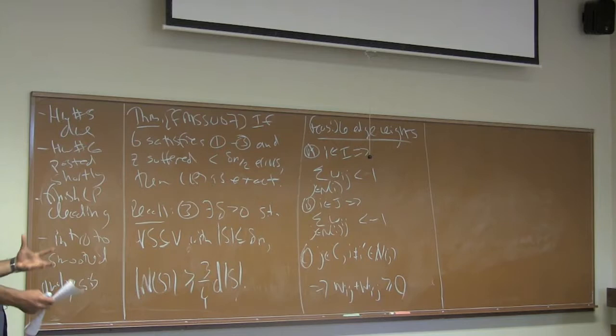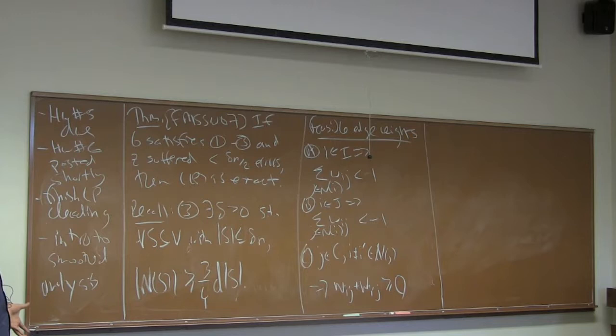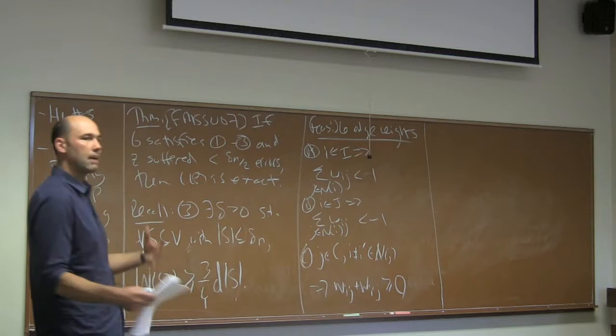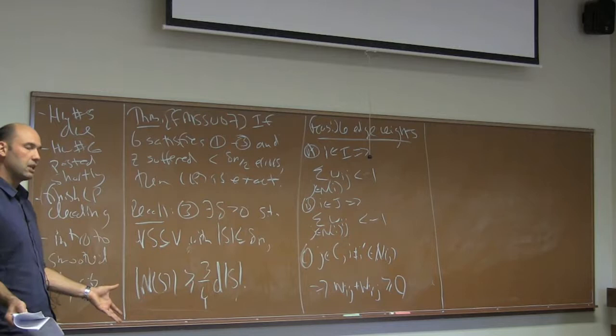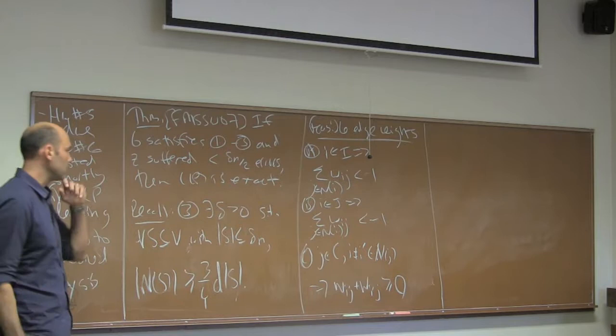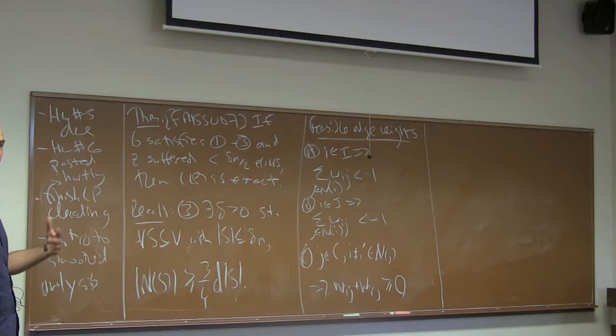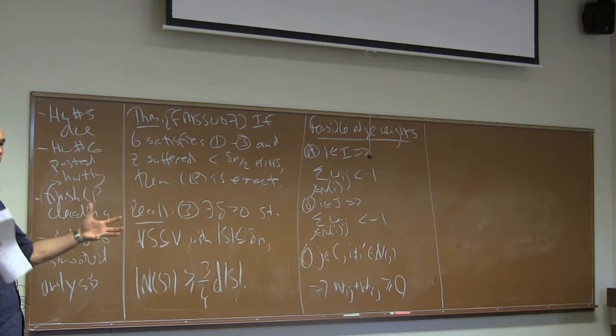Like in several previous lectures, we're studying when linear programming works. We write down the linear relaxation for this NP-hard problem — an integer program for finding the nearest codeword to a given message z. We looked at the linear relaxation, which is sometimes fractional. But we're asking for sufficient conditions under which LP gives us back the nearest codeword exactly.